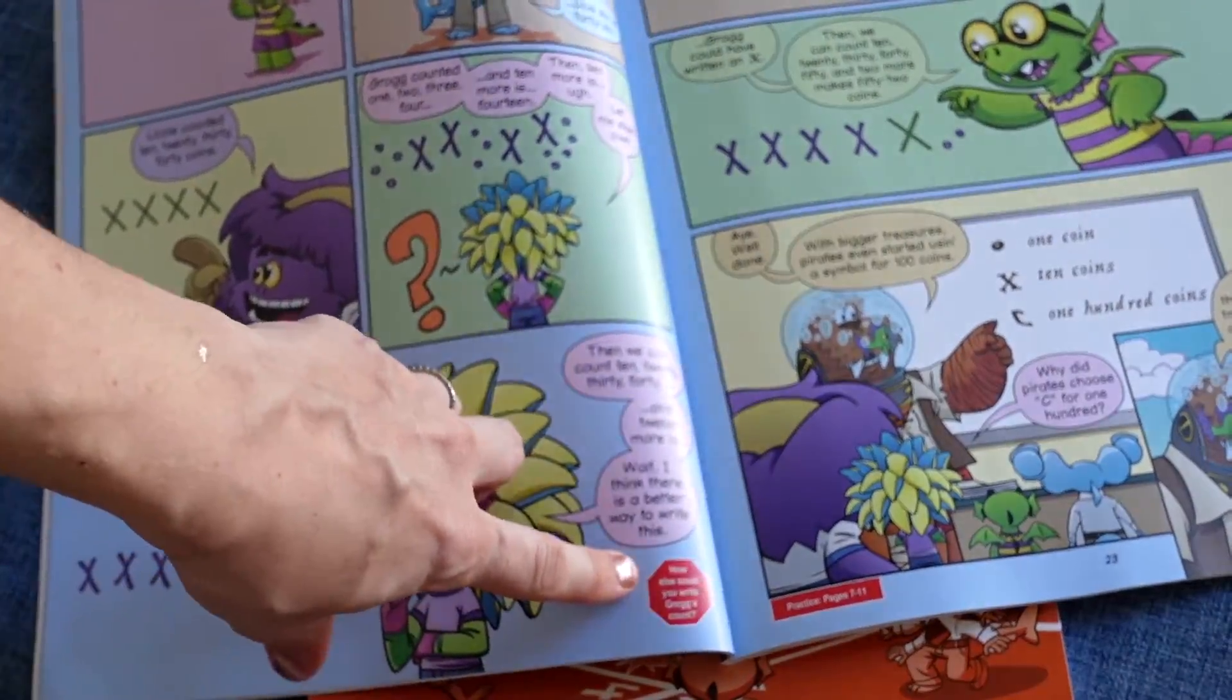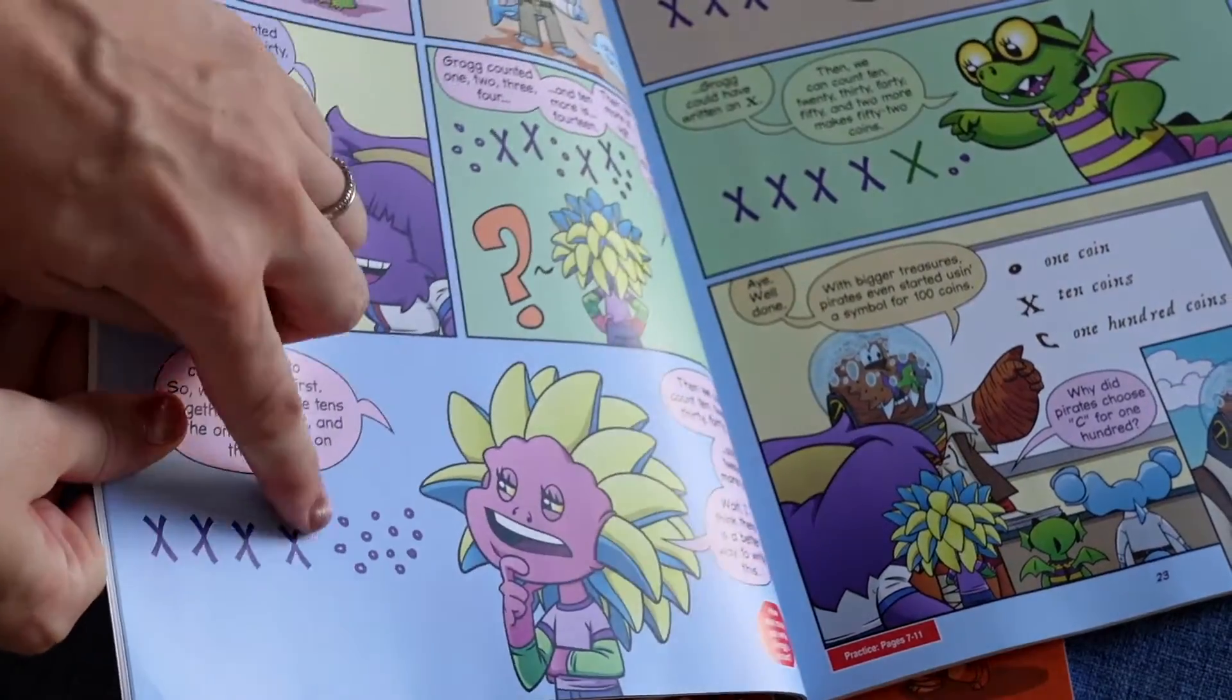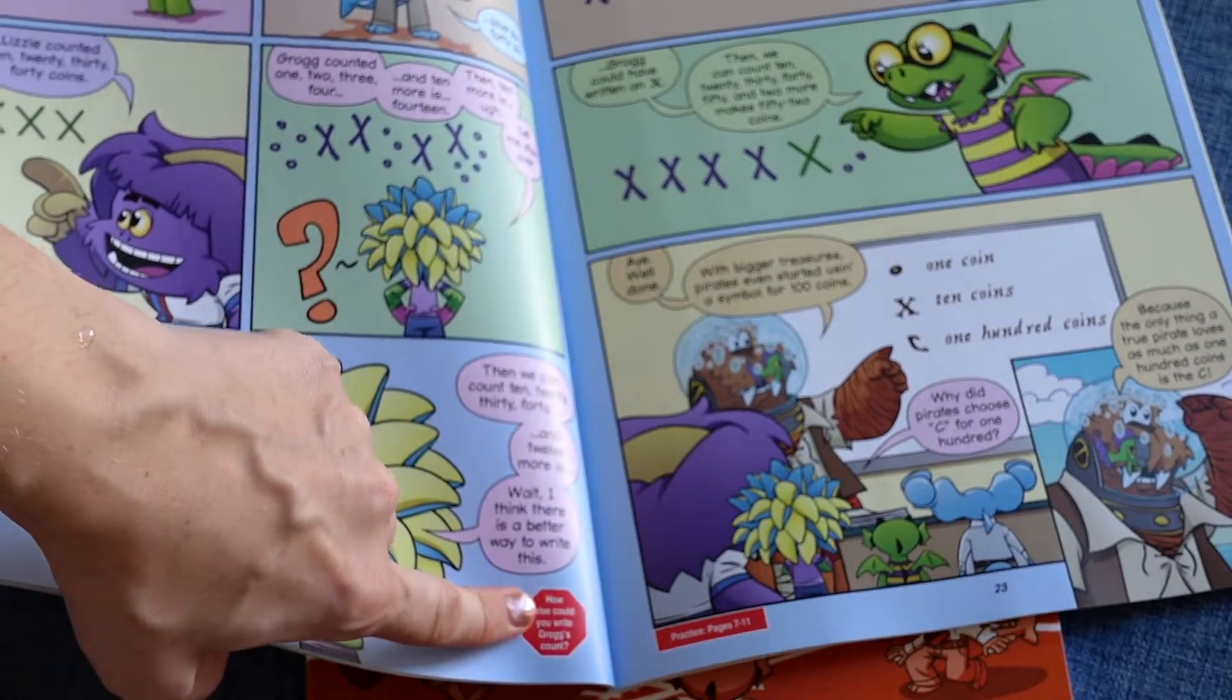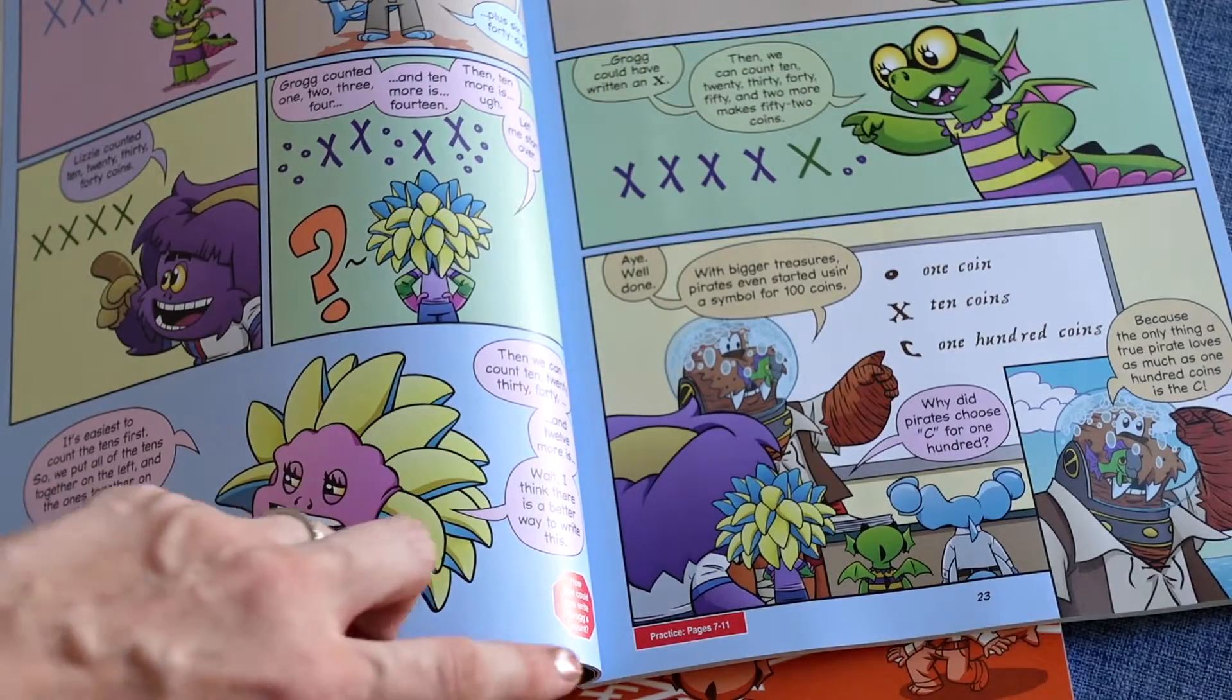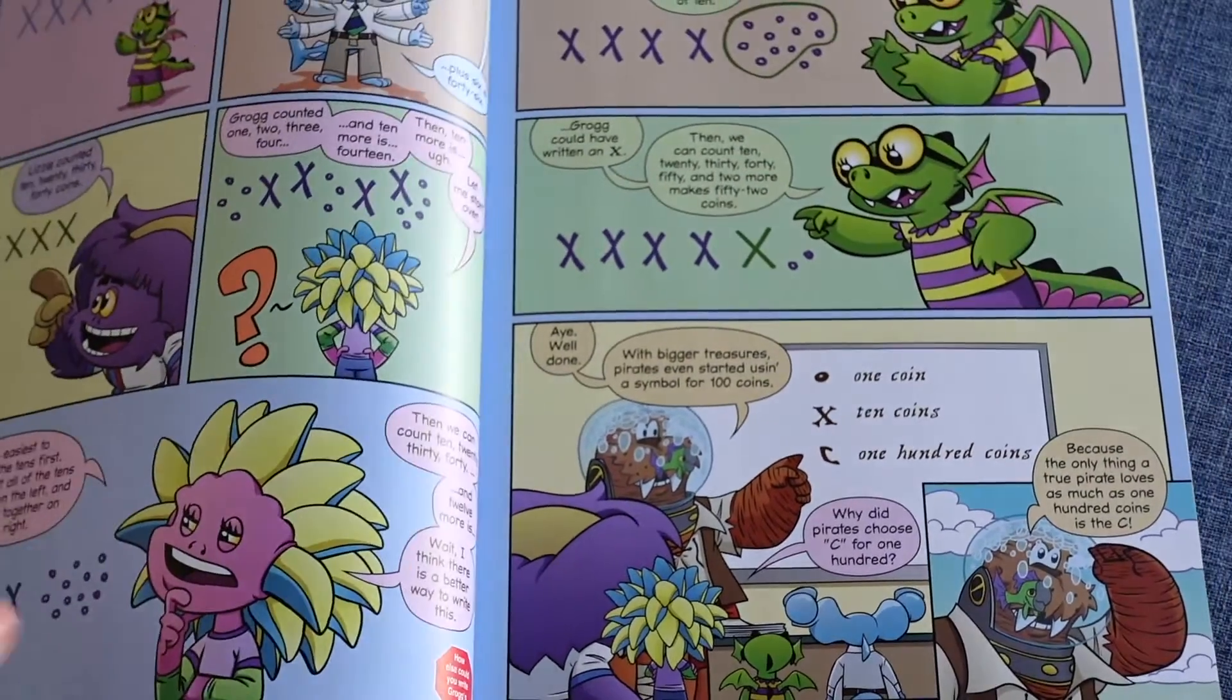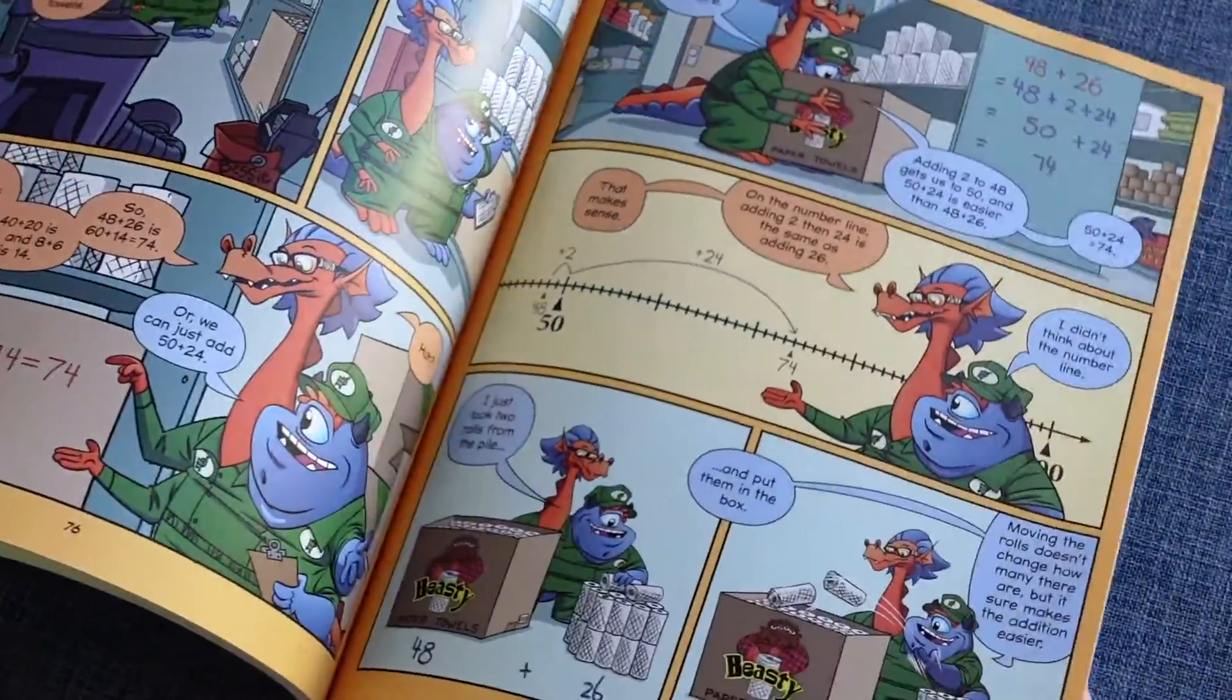Something to note is that there's little stop signs throughout the text. So, for example, how else could you write Grog's count right here? So it looks like they created symbols to represent a count. You're supposed to stop, discuss, or the student is supposed to answer these questions. There are also little boxes at the bottom of the page to point you to, okay, you can go to the practice book now. And these pages in the practice book will apply to the concepts being introduced here. So that is a glimpse inside the book.